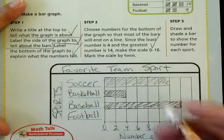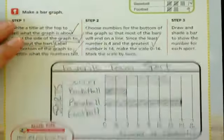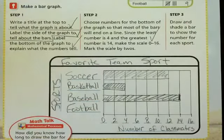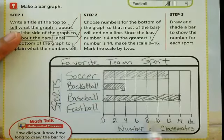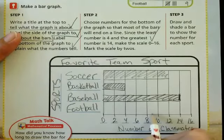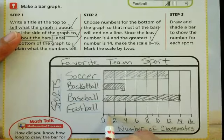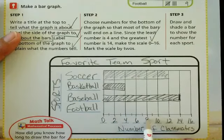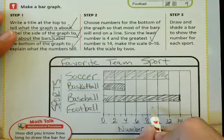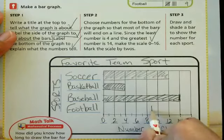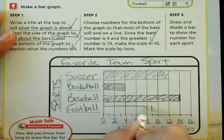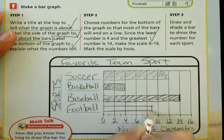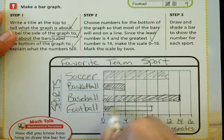And then football had nine. So where is nine going to be on my graph? Well, I know that nine is bigger than eight and smaller than 10. So nine is actually in between those two. I could count them. One, two, three, four, five, six, seven, eight, nine. So it goes halfway in between. So I'm going to draw my line for football. And I'm going to draw my bar to meet it.